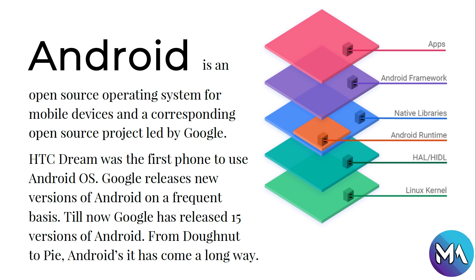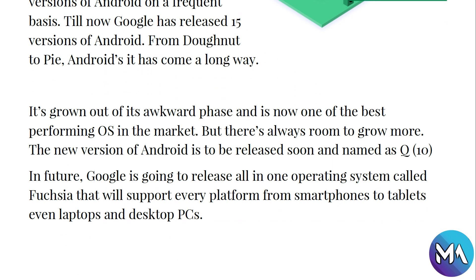The HTC Dream was the first phone to use the Android OS. Google has released 15 versions of Android on a frequent basis, from Donut all the way to Pie, and Android has come a long way to its latest version, Android 10. It has grown out of its awkward phase and is now one of the best performing operating systems on the market. A new version named Android Q/10 is also expected soon. In the future, Google is planning to release an all-in-one operating system called Fuchsia that will support every platform — from smartphones to tablets, even laptops and desktop PCs.